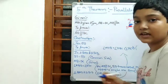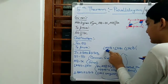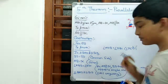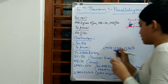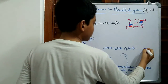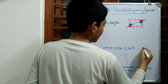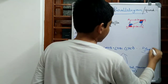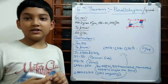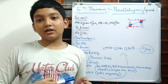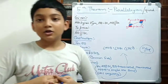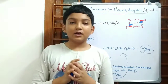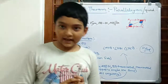So angle ADB equals angle DBC, which are alternate interior angles, meaning AD is parallel to BC. Hence proved. Our fifth theorem is done. Meeting you in the next video — till then be safe, and thank you.